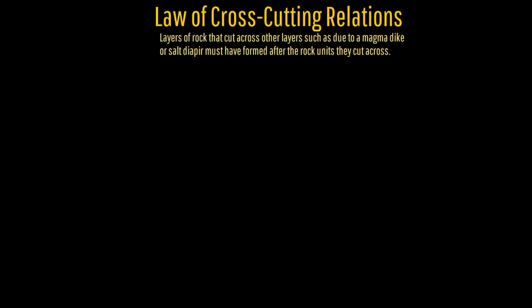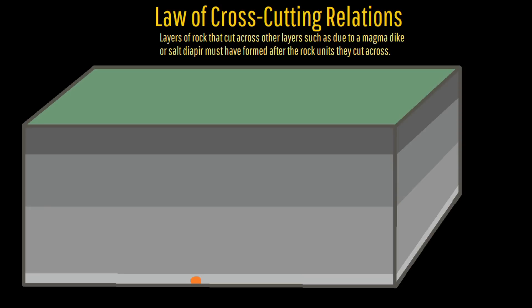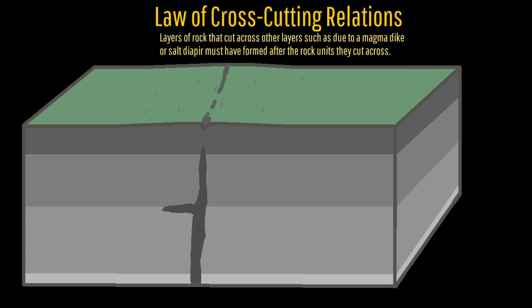Fourth, the law of crosscutting relations. Layers of rock that cut across other layers, such as due to a magmatite or salt diapir, must have formed after the rock units they cut across.